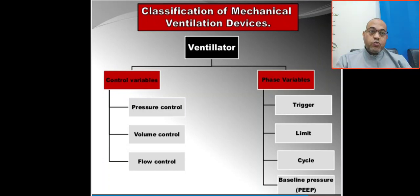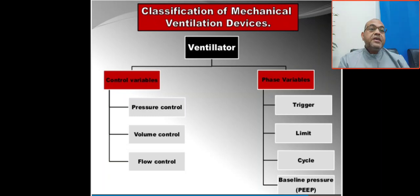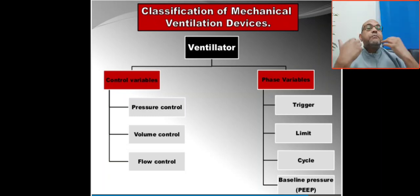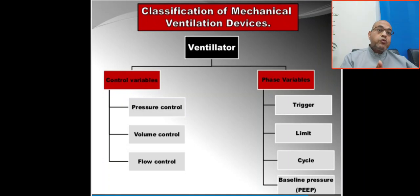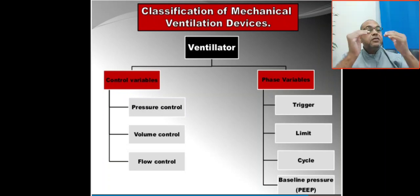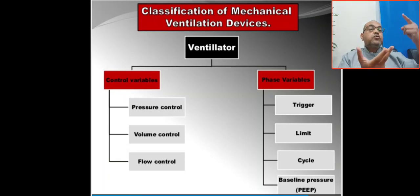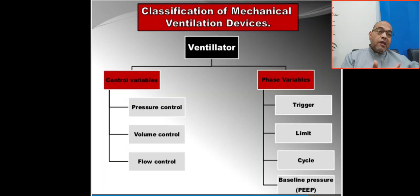Volume control means I set the volume, and the pressure and time will be the variable. Dual control — like pressure regulated volume control in the Servo-i — combines both pressure and volume together. So the control variable categories are: pressure control, volume control, and dual, such as pressure regulated volume control.